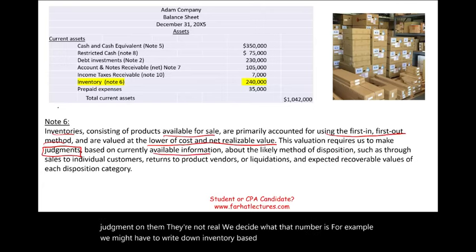Some companies may also have an 'other assets' section — this is a catch-all category that varies in practice. It includes anything that doesn't fit under current assets, long-term investments, property/plant/equipment, or intangible assets. You could have long-term prepaid expenses, long-term receivables, or restricted cash restricted for a longer period of time.